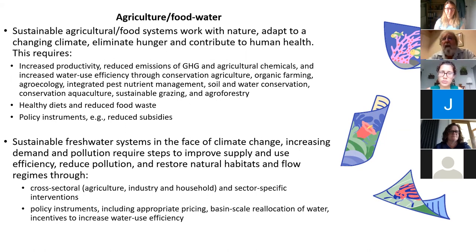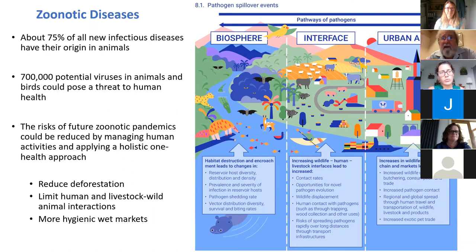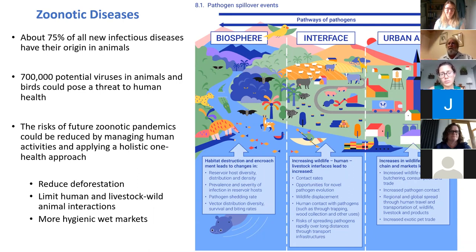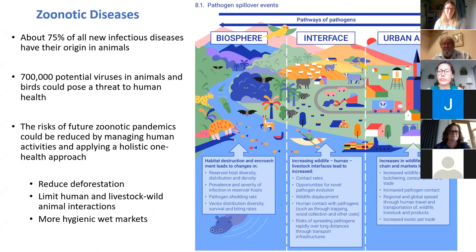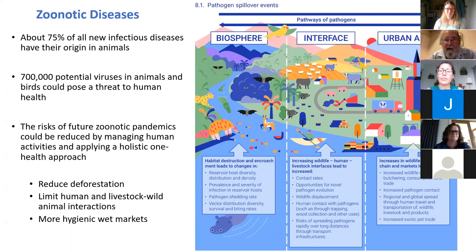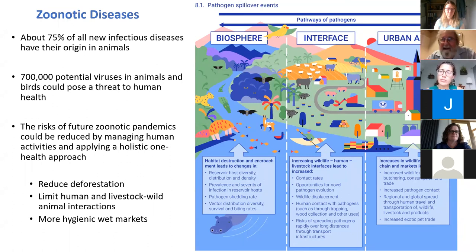A key issue is zoonotic diseases. 75% of all infectious diseases have their origin in animals. There are 700,000 potential viruses in animals and birds that could pose a threat to human well-being. To prevent future pandemics, we need to reduce deforestation, limit human-wildlife interaction, limit livestock-wild animal interaction since livestock can act as a carrier between wild animals and ourselves, and ensure much more hygienic wet markets. We will also need much better international cooperation.